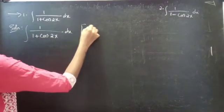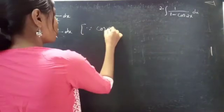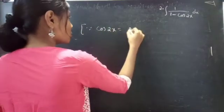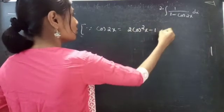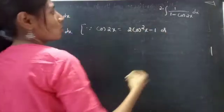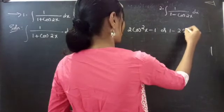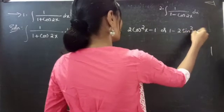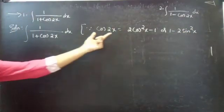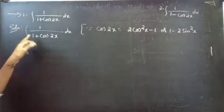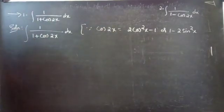We know that cos2x equals 2cos²x minus 1, or 1 minus 2sin²x. We need to choose a cos2x formula so that we can cancel the 1 in the denominator.